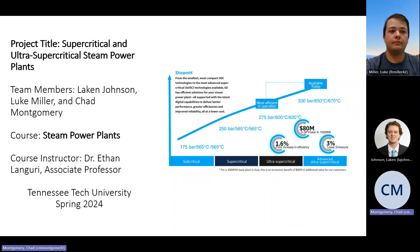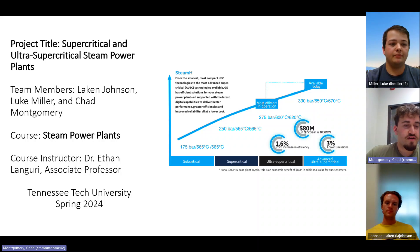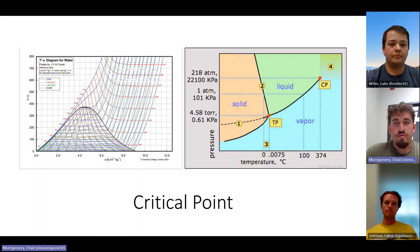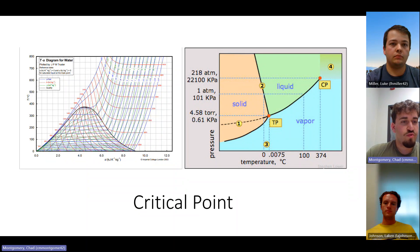This is Chad Montgomery, Luke Miller, and Lincoln Johnson. We have the supercritical and ultra supercritical steam power plants presentation. A supercritical power plant is a high efficiency and low emissions plant. They achieve this by having the working fluid at the supercritical point — a supercritical fluid has no distinction between a liquid or steam.